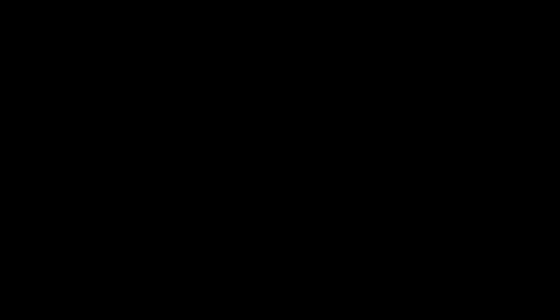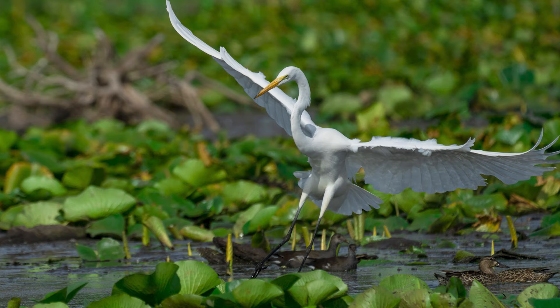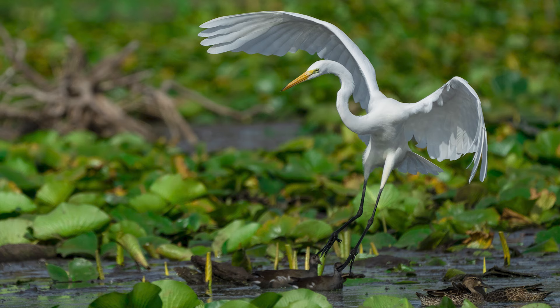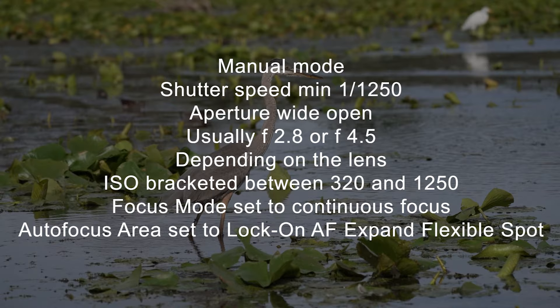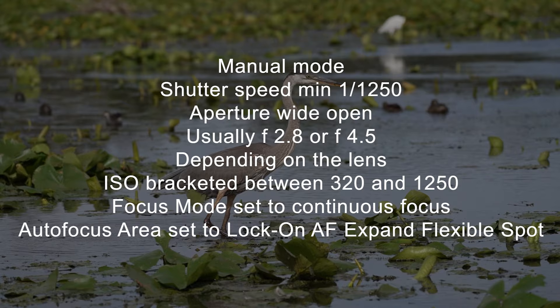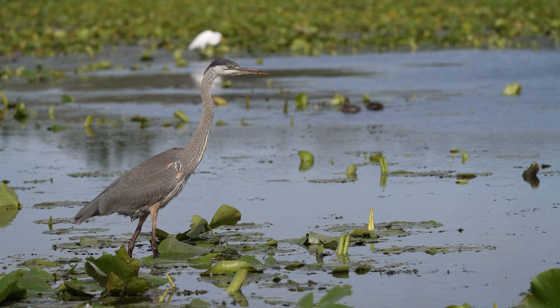Sony camera setting number three: what mode should you use? Here are my default Sony A7R Mark IV settings for bird photography — manual mode, shutter speed minimum 1/1250s, aperture wide open (usually f/2.8 or f/4.5 depending on the lens), ISO bracketed between 320 and 1250, focus mode set to continuous autofocus, autofocus area set to lock-on autofocus expand flexible spot. Let me break down why I start there and what usually happens in the field.